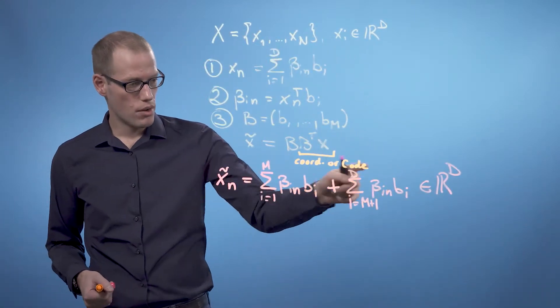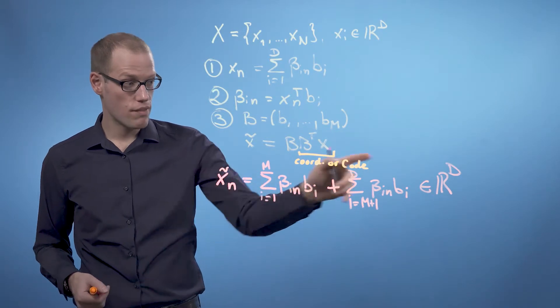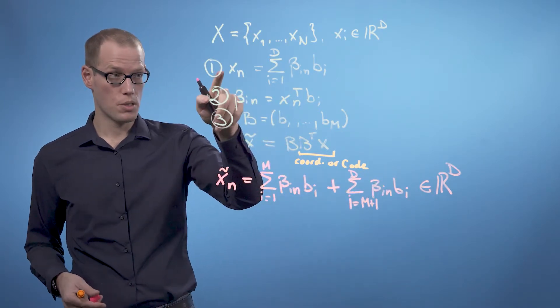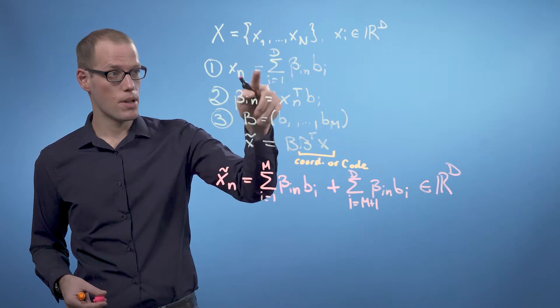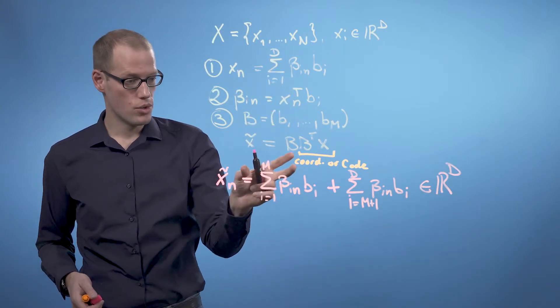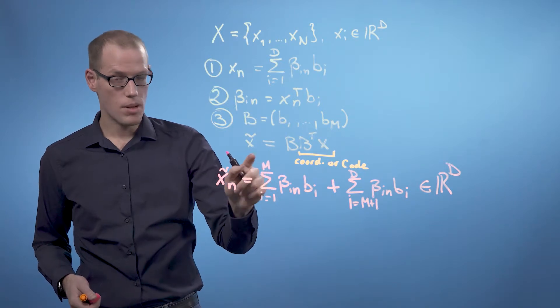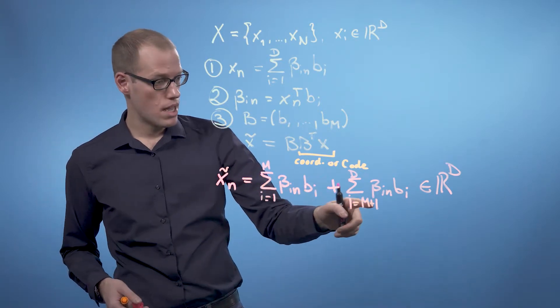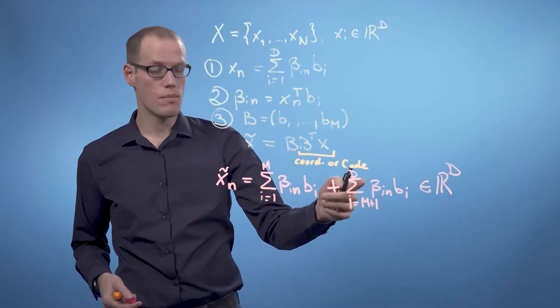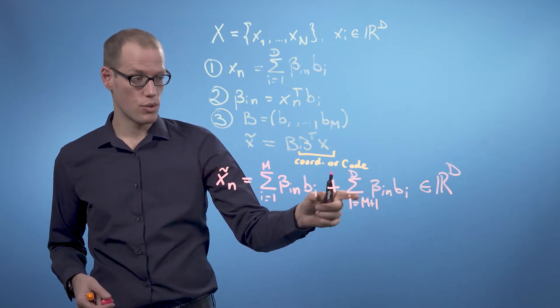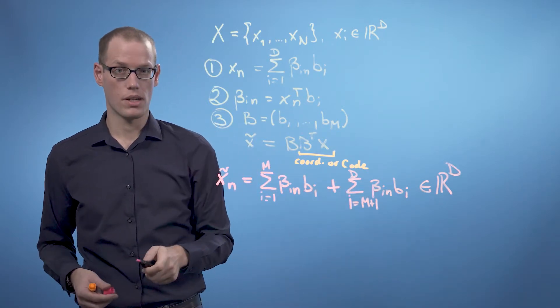So we took our general way of writing any vector in R^d, which comes from property 1, and we split the sum into two sums. One is living in an m-dimensional subspace, and the other one is living in a d-m-dimensional subspace, which is an orthogonal complement to this particular subspace.